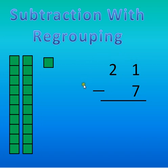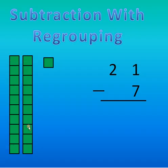I made the subtraction problem 21 minus 7. I am showing the number 21 in picture form with base 10 blocks. I have two groups of 10 for the 2 in my tens place, and 1 block for the 1 in my ones place.